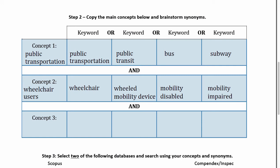When we search a database, separating the synonyms with OR will tell it that an article with any one of the alternative terms would work for us, which helps us get more results. When we use AND — sometimes used by default in a database — we can tell it that this concept also has to be represented, which helps narrow down the articles to our topic.